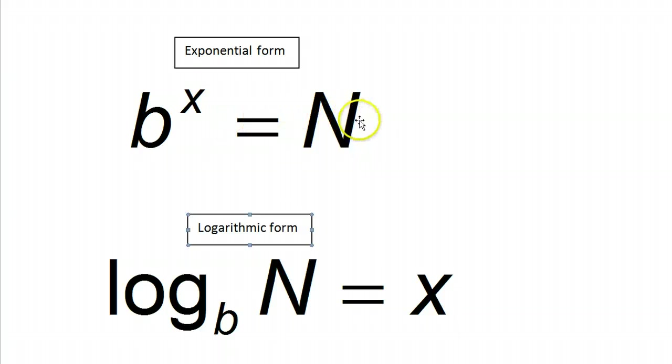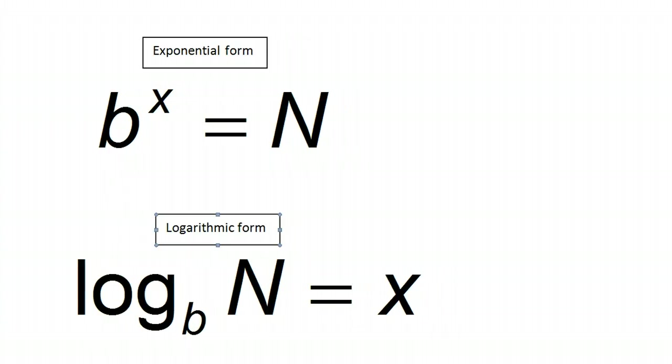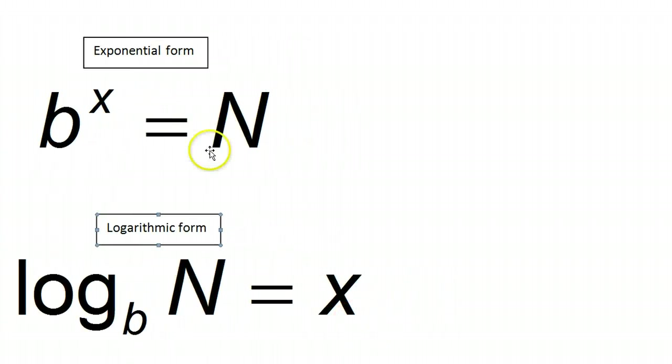Exponential form looks like this, logarithmic form looks like this, but these two expressions both mean the same thing. If this is true, then this is true and vice versa. So we should be able to switch back and forth between the two just by following the patterns.